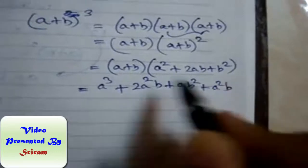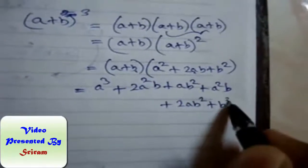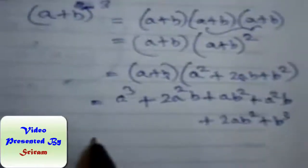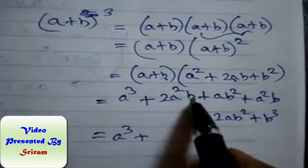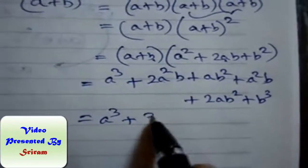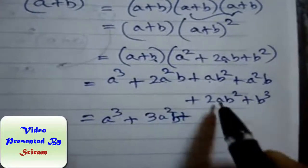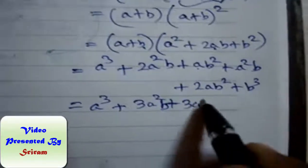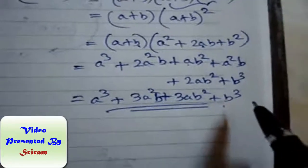Now combining all these together, we get a³ + 2a²b and a²b is 3a²b, plus ab² and 2ab² is 3ab², plus b³. This is the formula for (a + b) the whole cube. Now let's move on to 12 cube.